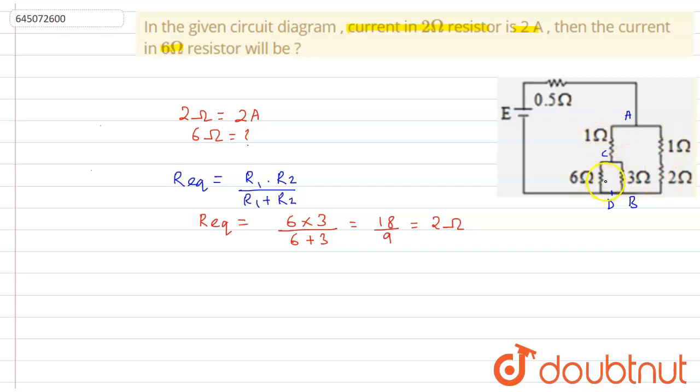1 ohm and 2 ohm, 1 ohm and 2 ohm. So I found it so that I could find the current in this branch. We know the current in this branch since the 2 ampere current is flowing through this 2 ohm resistor.